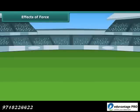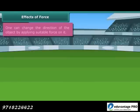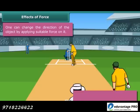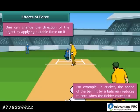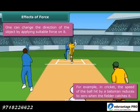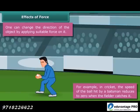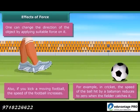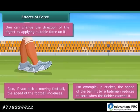One can change the direction of an object by applying suitable force on it. For example, in cricket the speed of the ball hit by the batsman reduces to zero when the fielder catches it. Also, if you kick a moving football the speed of the football increases.